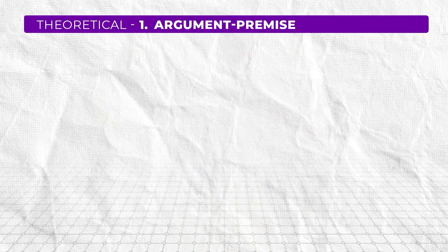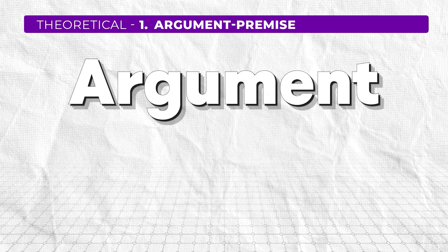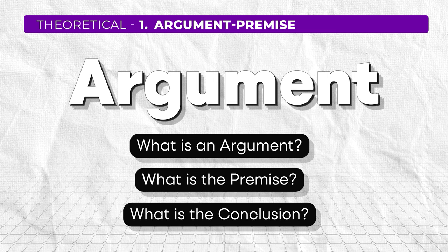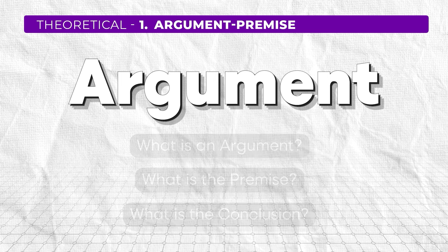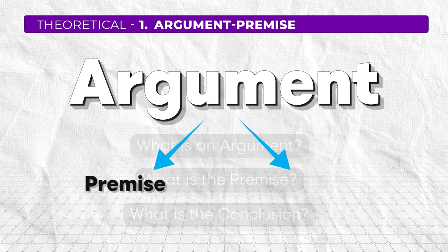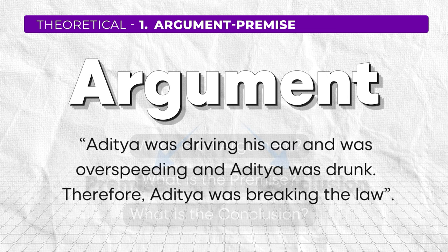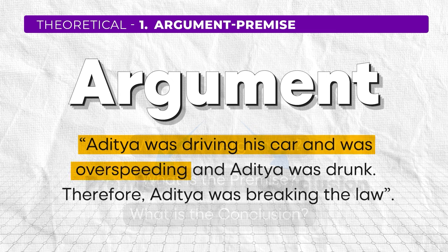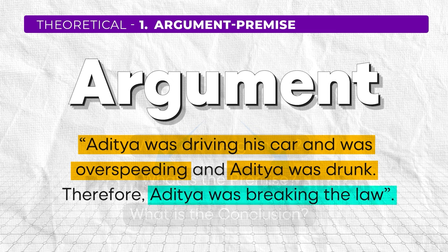The first kind of question you will encounter in UGC Net Paper 1 is about argument — what is an argument, what is the premise, what is the conclusion. In an argument we have two things: the premise, which are the sentences that support the argument, and the conclusion. For example, Aditya was driving his car and was overspeeding, and Aditya was drunk — therefore Aditya was breaking the law. The two premises are: Aditya was driving over the speed limit, and Aditya was drunk. The conclusion is: Aditya was breaking the law. You must know what a premise is, what a conclusion is, and what makes an argument.